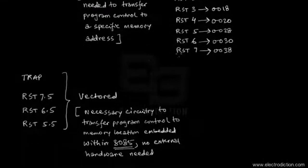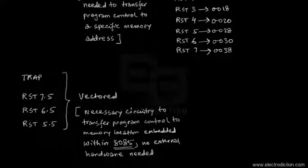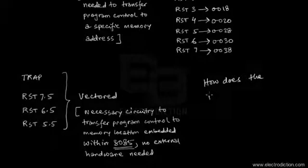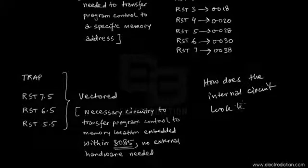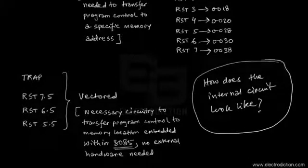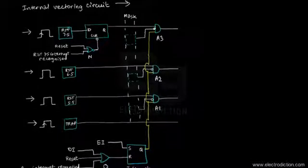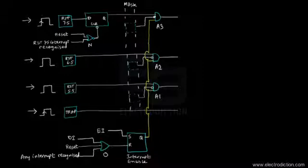The matter I'm going to discuss here is that the vectored interrupts — TRAP and the RST pins — get directed to the corresponding memory location to transfer program control whenever interrupted, and the circuit is present within the 8085. The question is: how does this internal circuit actually look? That's exactly what I'm going to answer in this tutorial. I'm bringing up a logic diagram that will have the answer to this question — the internal vectoring circuit.